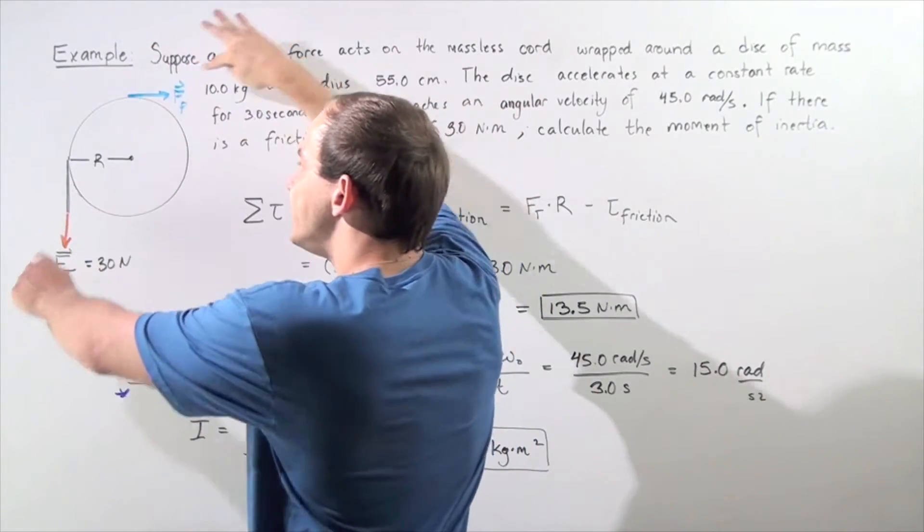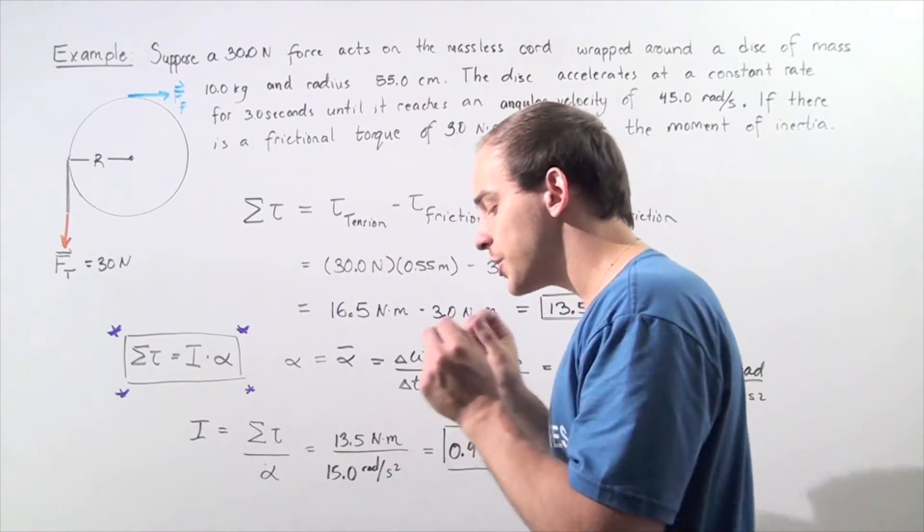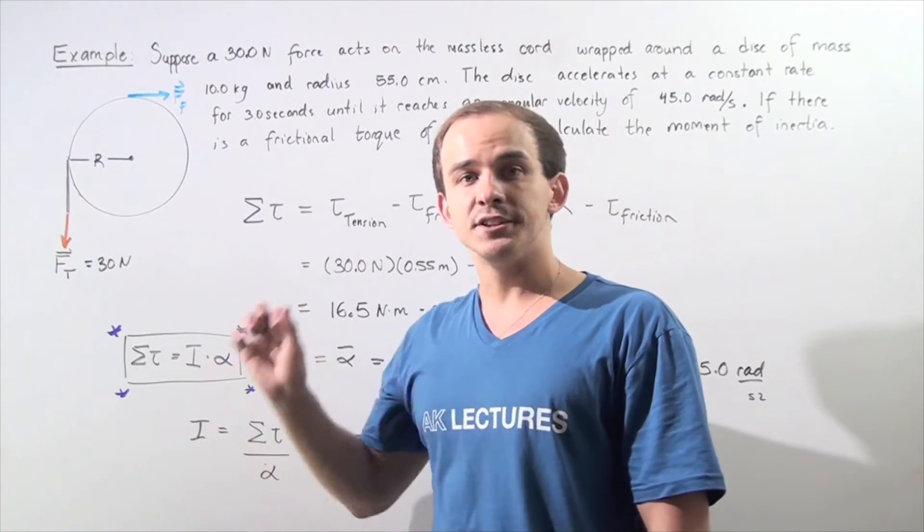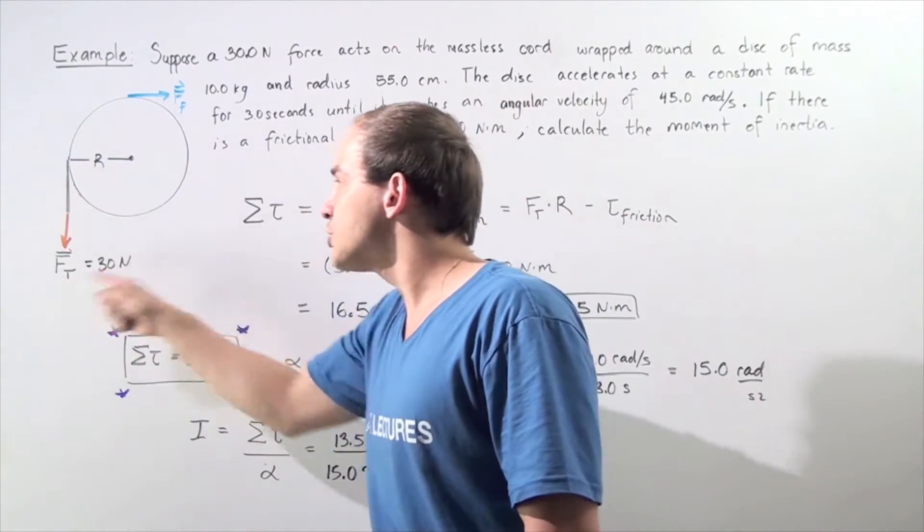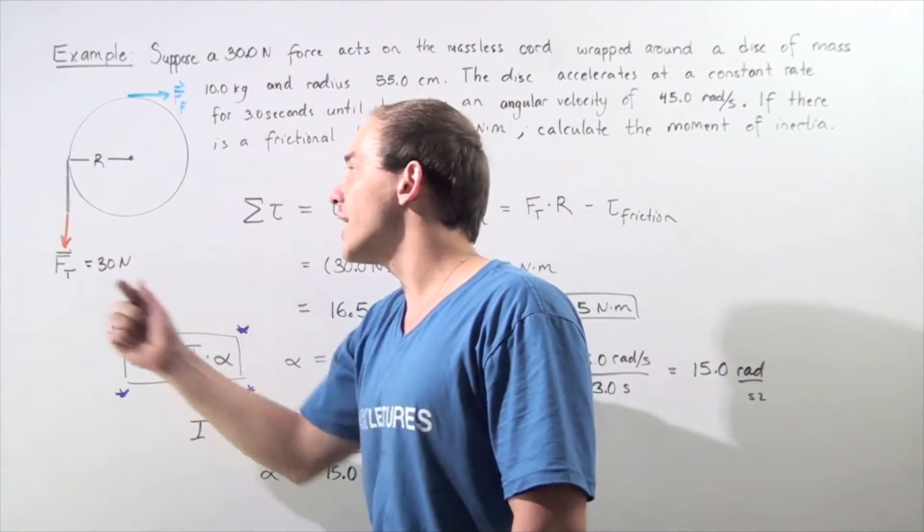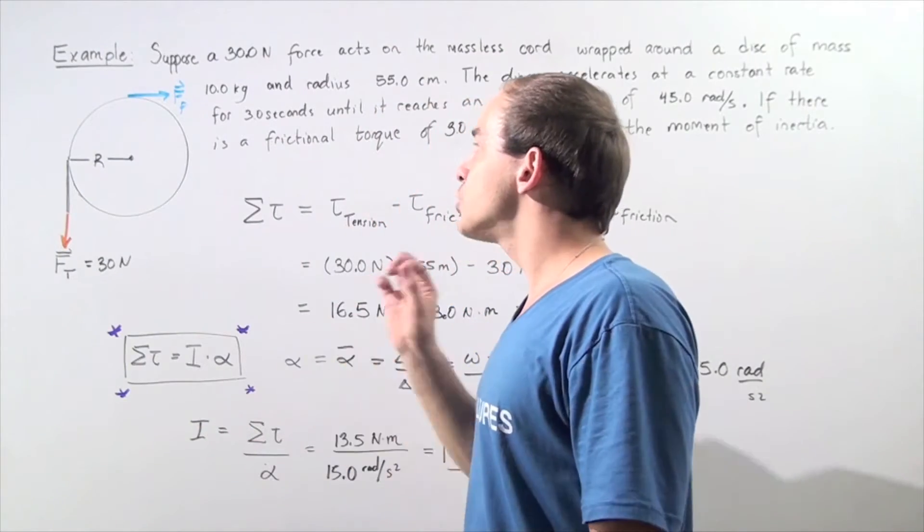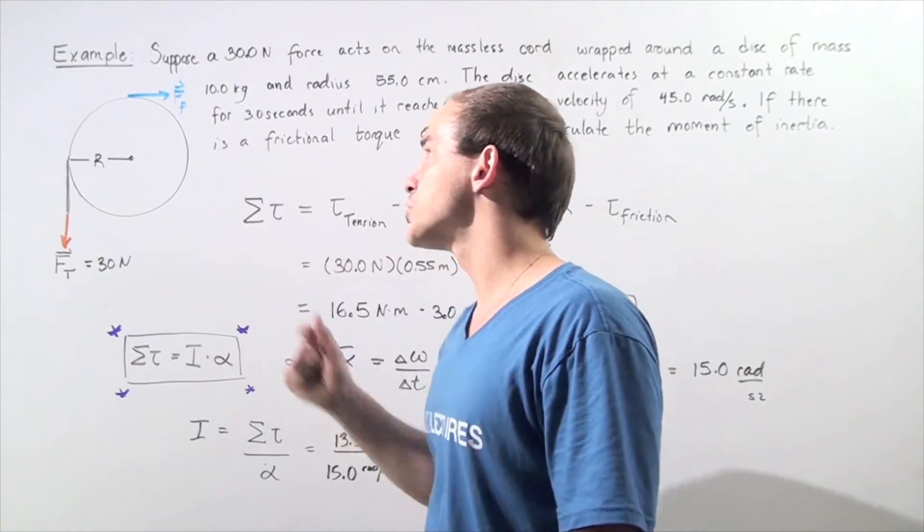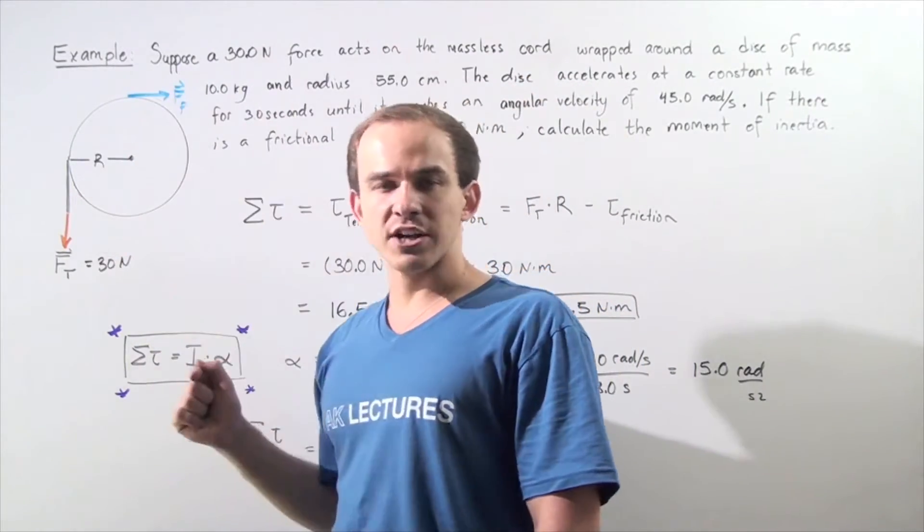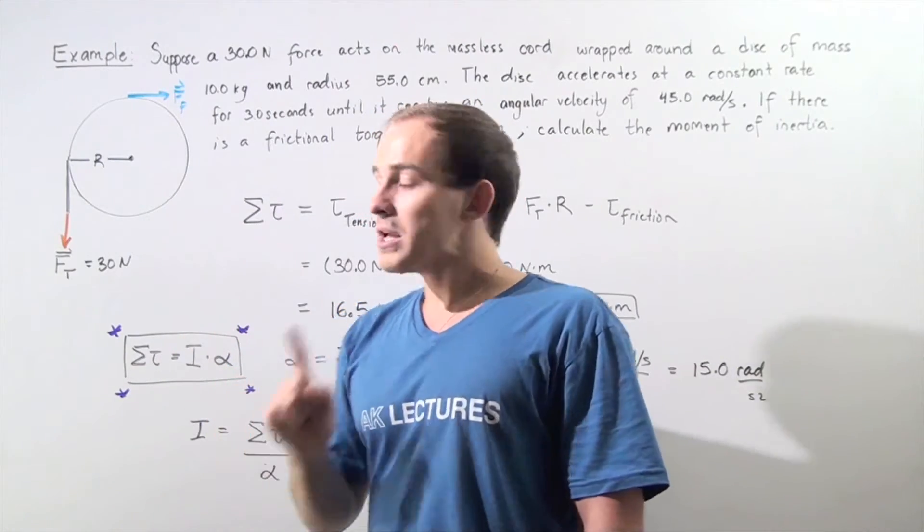They point in different directions and create torques in different directions. This torque points counterclockwise and is positive, while the torque created by the frictional force points clockwise and is negative.